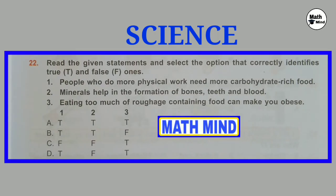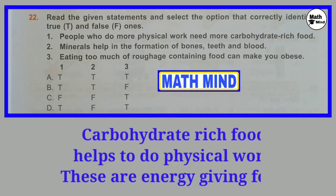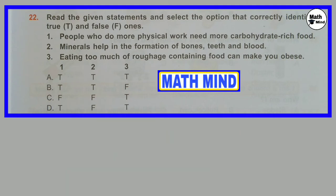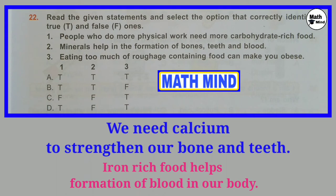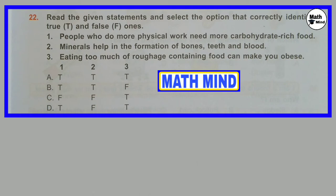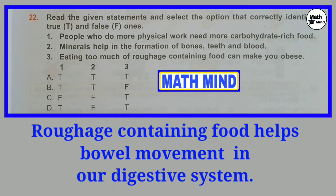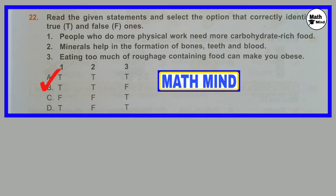Question number 22: Read the given statements and select the option that correctly identifies true and false ones. Statement 1: People who do more physical work need more carbohydrate-rich food. This is true. Bread, chapati, rice are carbohydrate-rich foods that help with physical work. Statement 2: Minerals help in formation of bones, teeth and blood. This is true — we need calcium for bones and teeth, and iron-rich food for blood formation. Statement 3: Eating too much roughage-containing food can make you obese. This is false. Roughage-containing food is good for bowel movement. Option B is correct.